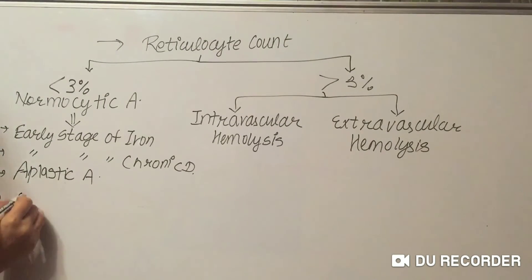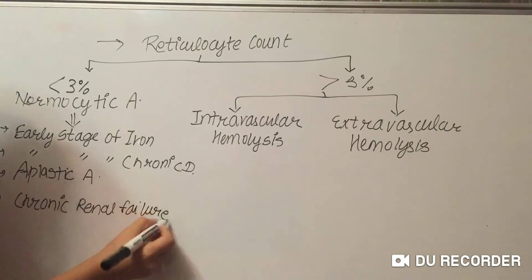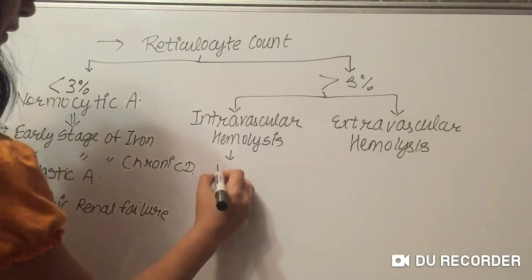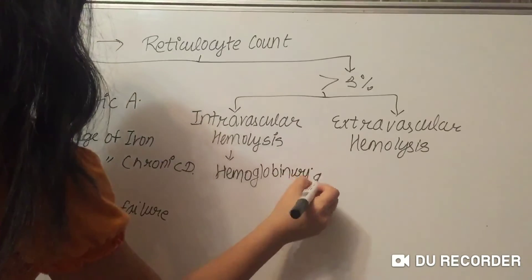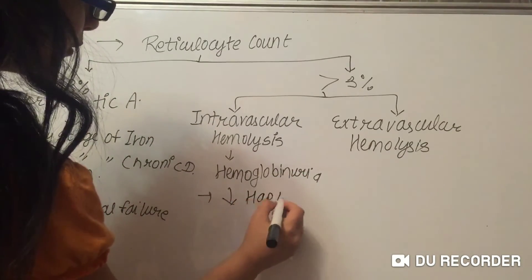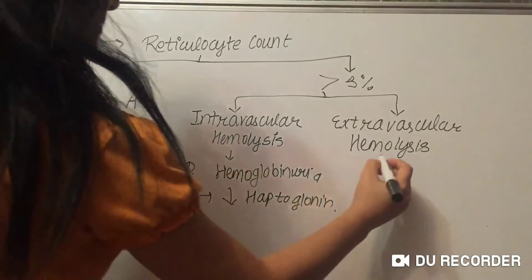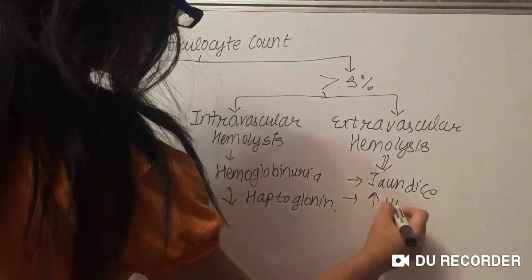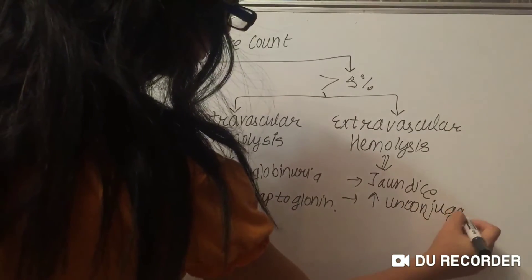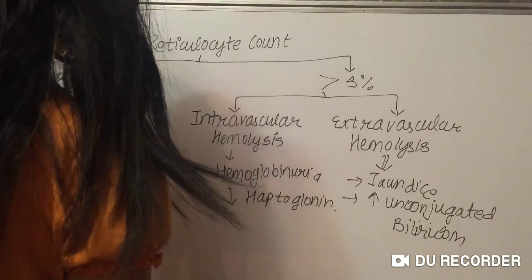Normocytic anemia also includes chronic renal failure. In intravascular hemolysis, we will see hemoglobinuria and decreased haptoglobin. In extravascular hemolysis, which occurs outside of the blood vessels, it includes jaundice, increased unconjugated bilirubin, and pigment stones.